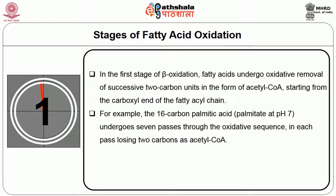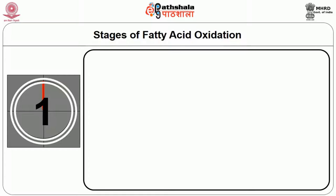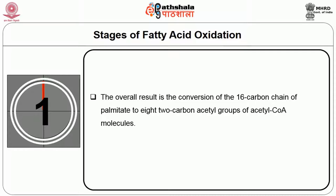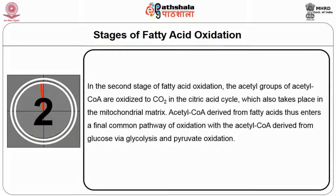At the end of the 7th cycle, the last 2 carbons of palmitate, originally C15 and C16, remain as acetyl-CoA. The overall result is the conversion of the 16-carbon chain of palmitate to 8 two-carbon acetyl groups of acetyl-CoA molecules. In the second stage of fatty acid oxidation, the acetyl groups of acetyl-CoA are oxidized to carbon dioxide in the citric acid cycle, which also takes place in the mitochondrial matrix.